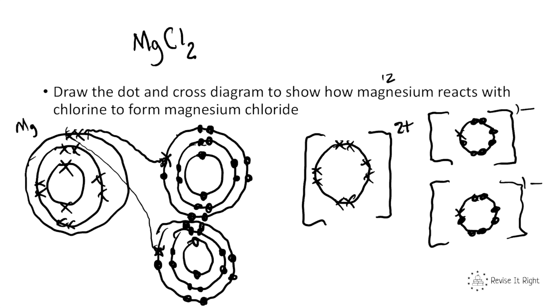Because there are 2 chlorines, we need to draw both. Each has 7 electrons plus 1 from magnesium, making each a 1− ion. These are now attracted to each other by an electrostatic force, causing them to ionically bond.